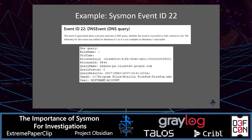Event ID 22, the DNS event, is such a great event. You can see the query name — in this case it's some Google telemetry. You can also see the image (the executable, in this case Firefox) and the user.